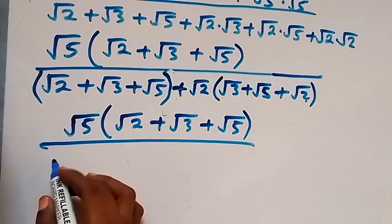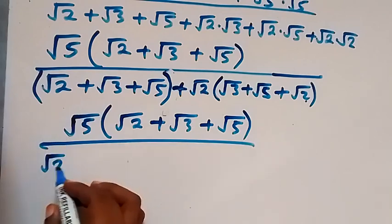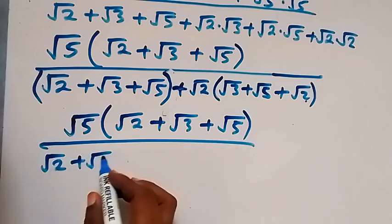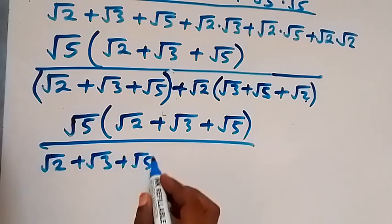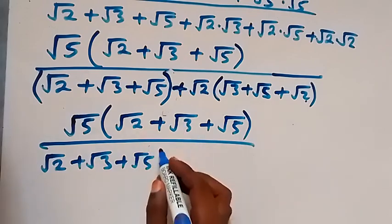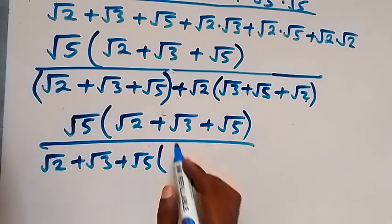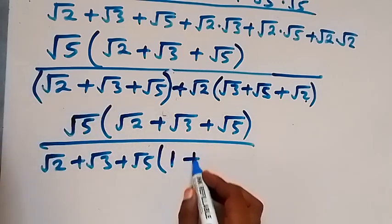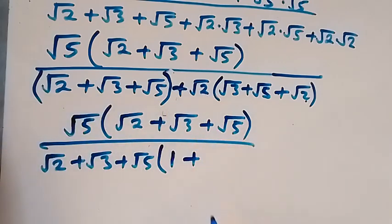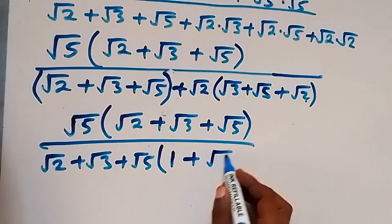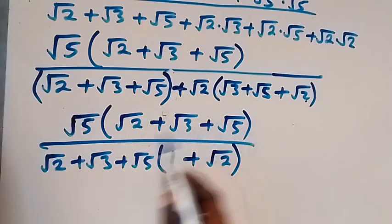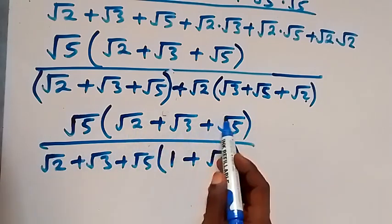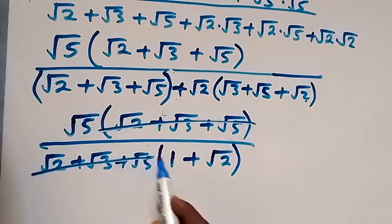What is common here is root 2 plus root 3 plus root 5. When we take that out, what is left here is 1, then plus what is left here is root 2, then close bracket. The root 2 plus root 3 plus root 5 in the numerator and denominator cancel each other.